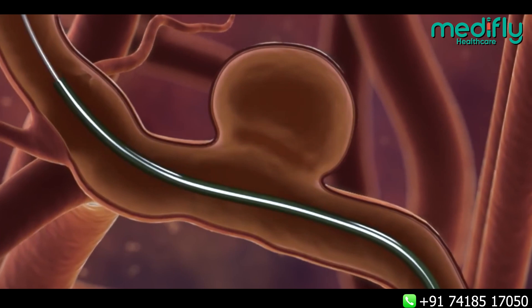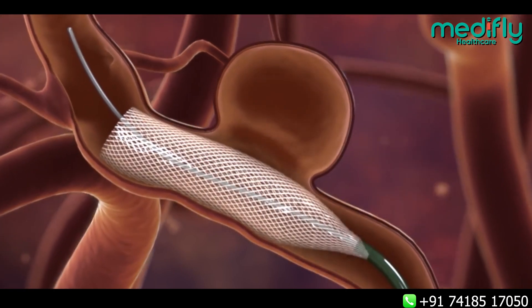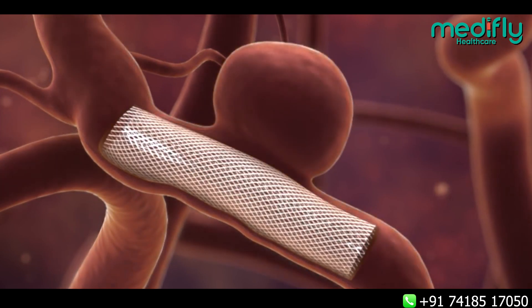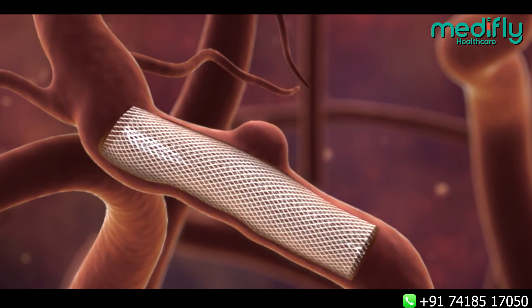For more complex aneurysms we treat using newer devices like flow diverters. A flow diverter is a thick mesh stent which is placed in the parent artery so that over a period of time the flow of blood into the aneurysm reduces and the blood vessel remodels. There are also newer devices like contour and web, which are flow diversion devices placed within the aneurysm allowing the aneurysms to heal.